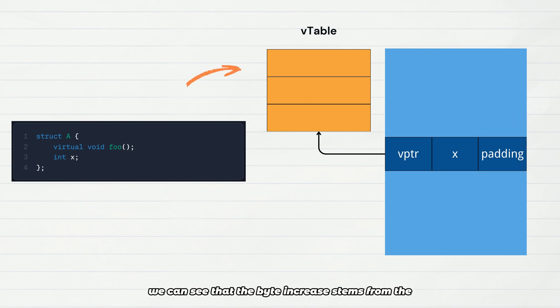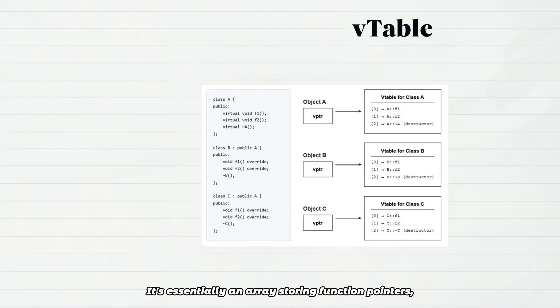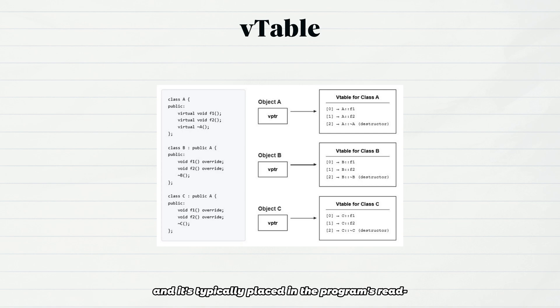From the above, we can see that the byte increase stems from the vtable, but what exactly is it? At its core, it's a lookup table generated by the compiler for classes with virtual functions. It's essentially an array storing function pointers, and it's typically placed in the program's read-only data section to prevent accidental modification.